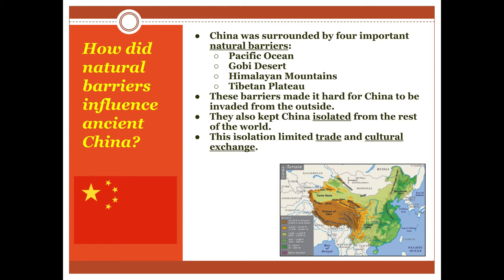The isolation made trade very, very difficult. If you wanted to trade with China, you had to go to great effort to do it. More importantly, it made cultural exchange difficult, so Chinese culture was pretty much insulated and protected from outside influence. But that sometimes meant there were times where China was way ahead of the rest of the world, and other times where the rest of the world was way ahead of China — a two-way street.